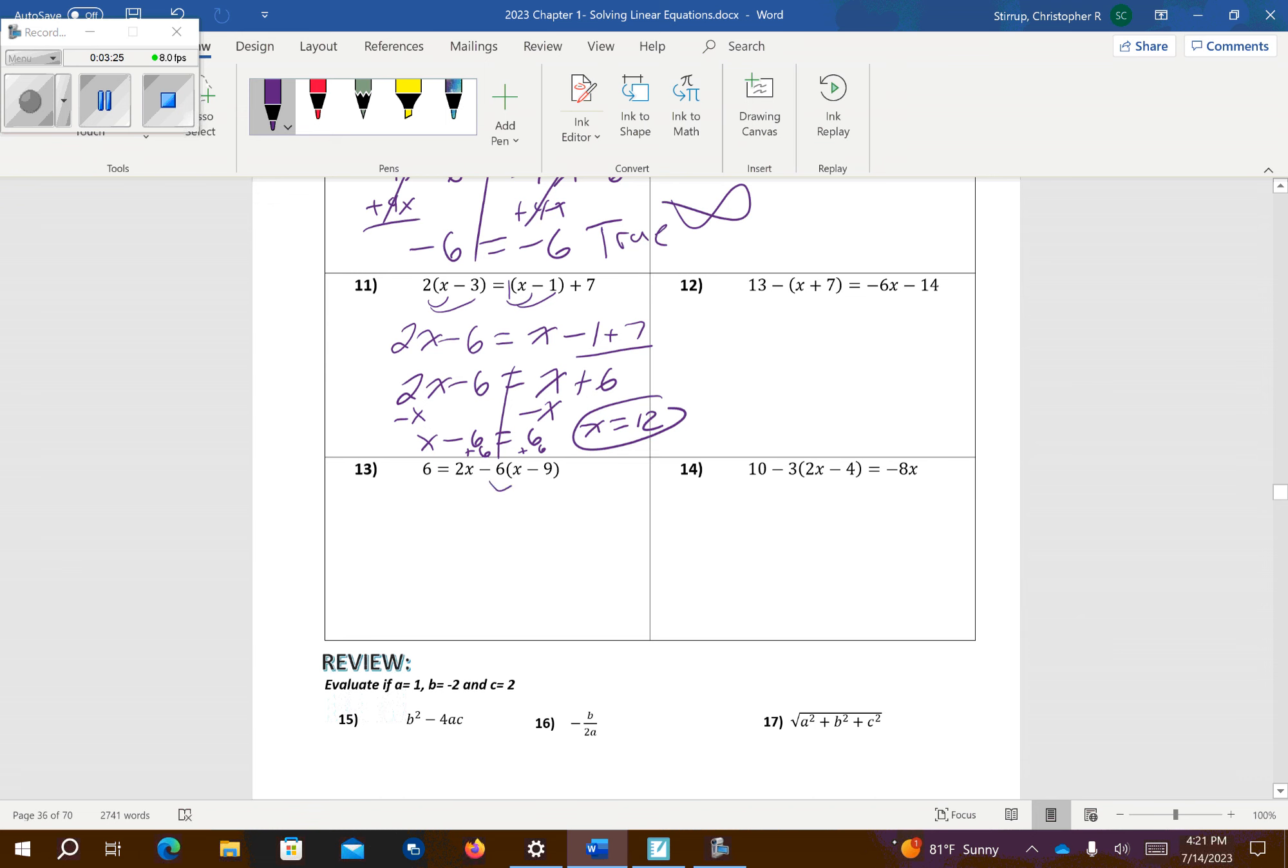Number 13, I'm going to distribute negative 6 to both of those. So I get 6 equals 2x. Negative 6 times x is negative 6x. Negative 6 times 9 is positive 54. And these are like terms, so I can go ahead and combine those together. So that's going to give me negative 4x, because 2x minus 6x is negative 4x, plus 54. Subtract 54 from both sides. If those cancel, that gives me negative 48 equals negative 4x. And it doesn't matter if the x is on the right side or not. I divide each side by the negative 4. Negative over negative is positive. 48 over 4 is 12.